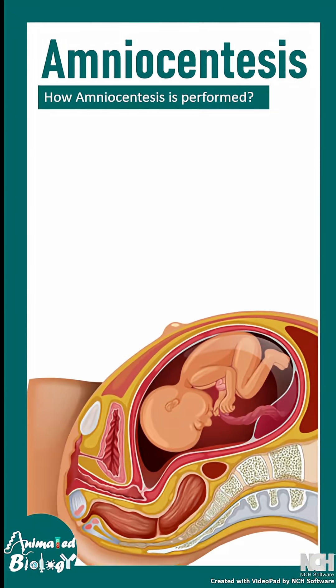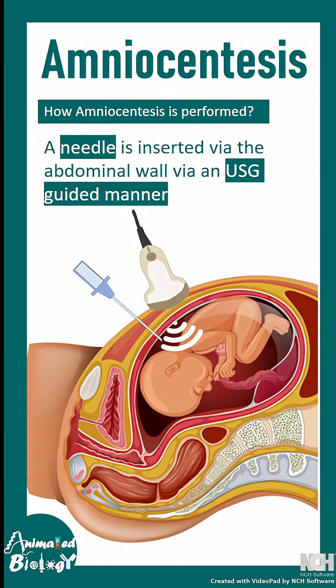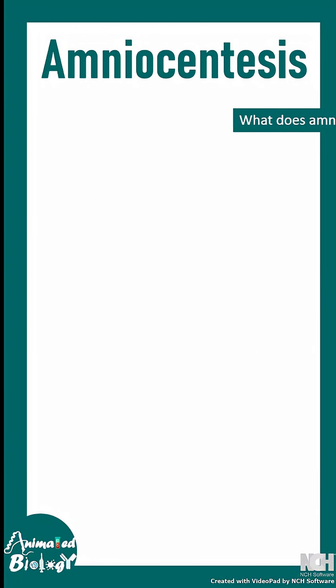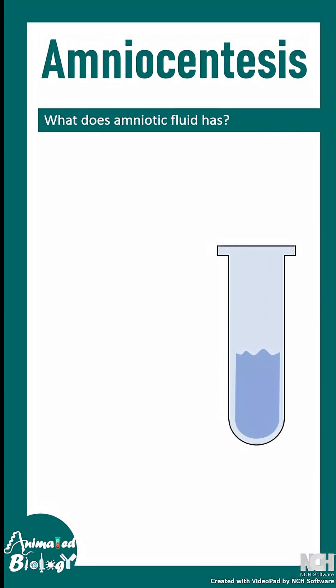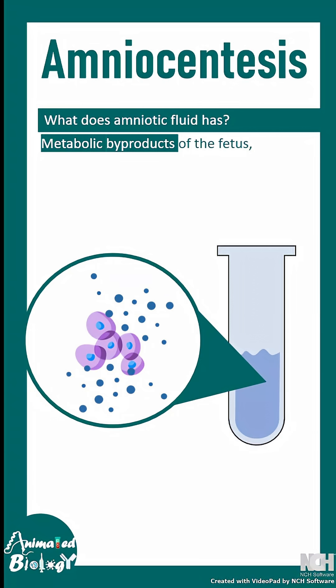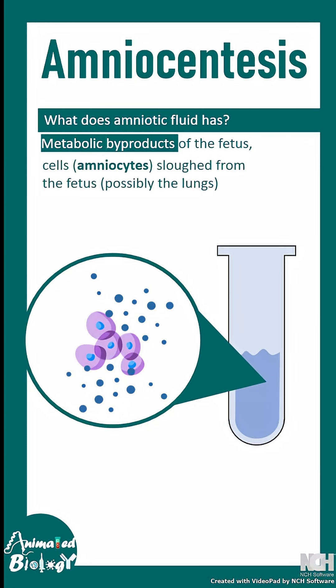Amniotic fluid is a fluid that surrounds the embryo, and this is collected with a needle guided by ultrasound. The amniotic fluid may contain several metabolites secreted from the fetus during embryonic development. It may also contain cells called amniocytes, possibly sloughed from the fetus during development — for example, from the lungs.